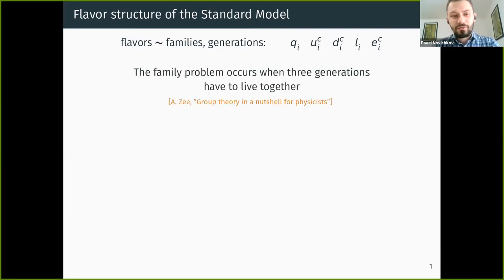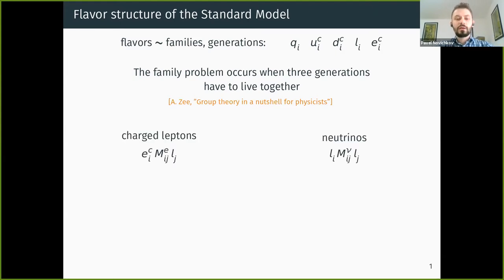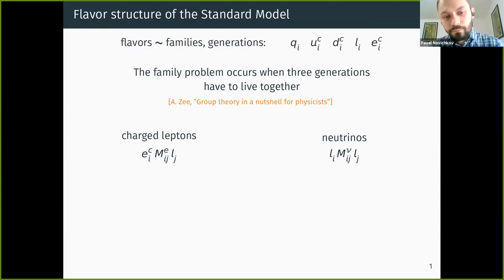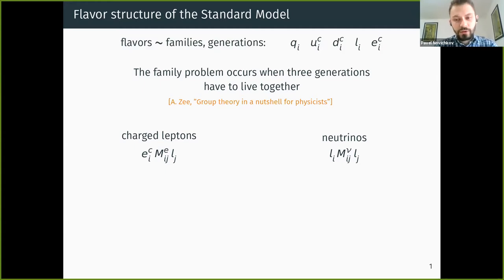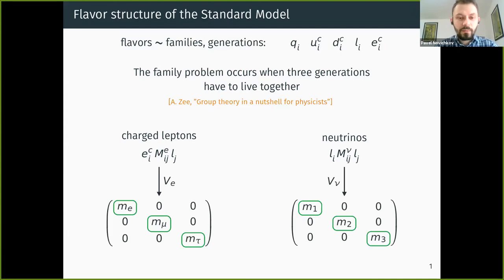The family problem occurs when three generations have to live together. The flavor observables arise from the mass terms — as soon as you form a mass term with two fermions you immediately get nine terms instead of just one, because each generation can couple to each generation. So instead of just one mass parameter you get a three-by-three mass matrix. For example, these are the mass matrices relevant for charged leptons and for neutrinos.